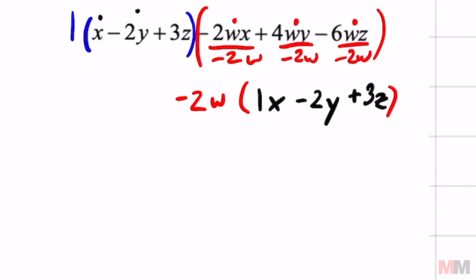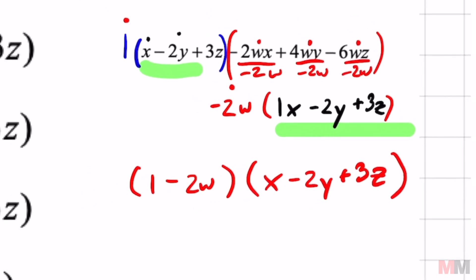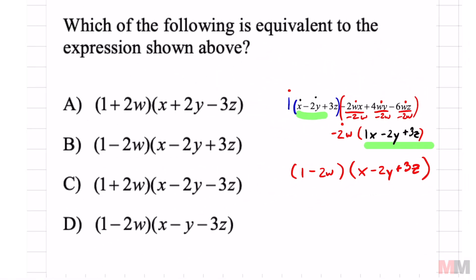They've got that common parentheses, so it's the same structure as before. Terms in the front go in one parentheses: (1 − 2w). The second batch is the parentheses they have in common: (x − 2y + 3z). Your answer is letter B.